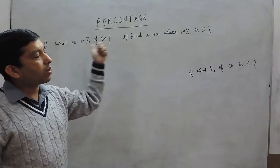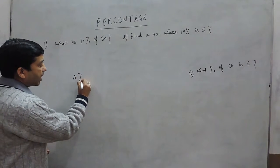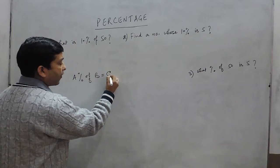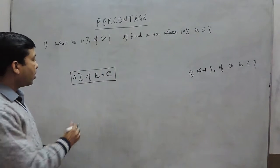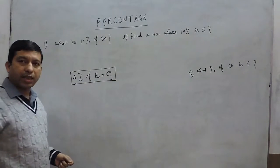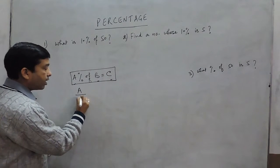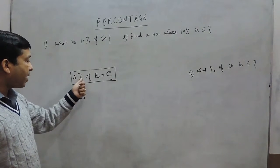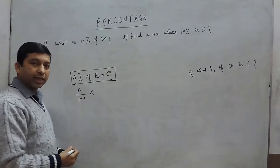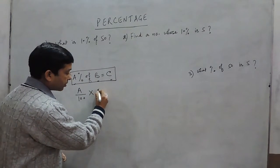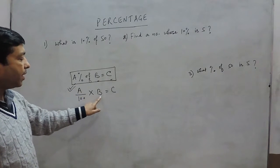Now let's look at the concept. We have to define in our mind the basic format of any percentage question, which is: A percent of B is equal to C, where A, B, and C are three different values. This can be written as A upon 100 — because percent means out of 100 — multiplied by B, is equal to C. So the basic formula is: A upon 100 multiplied by B is equal to C.